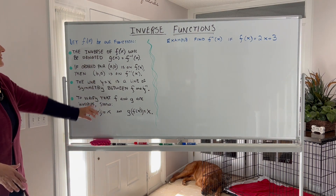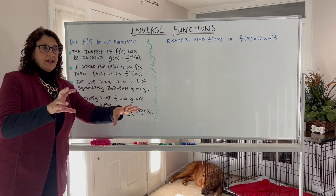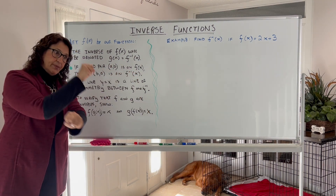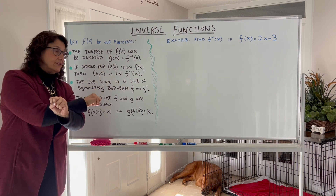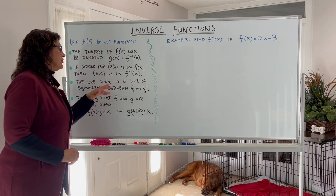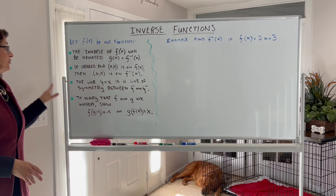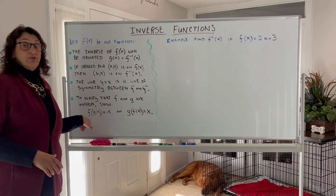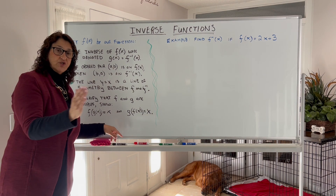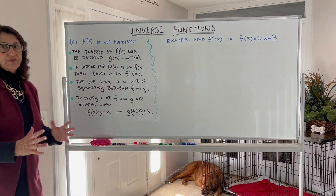Some properties of functions and their inverses: if the point (a, b) is on the function, then switch the a and b around — (b, a) is going to be on the inverse. The line y equals x is a line of symmetry between functions and their inverses. And to verify that you have an inverse, we do composition of functions. We show that f of g of x equals x, and we show g of f of x equals x.